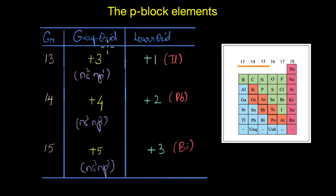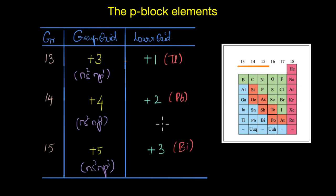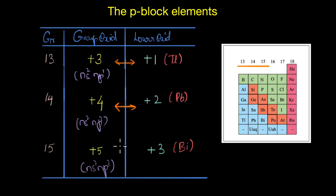For example, in group 13 the group oxidation state is +3, corresponding to the total number of valence electrons. However, the heaviest member, thallium, is more stable in +1. Similarly, in groups 14 and 15, the heavier members like lead and bismuth are more stable in the lower +2 and +3 oxidation states instead of +4 and +5. These two oxidation states differ by exactly two units.